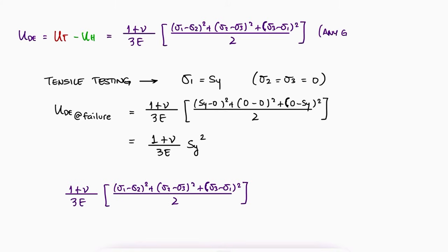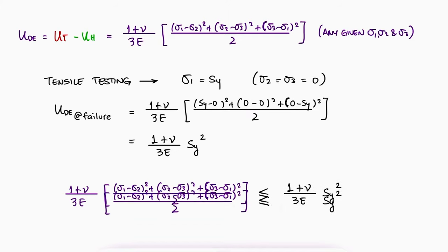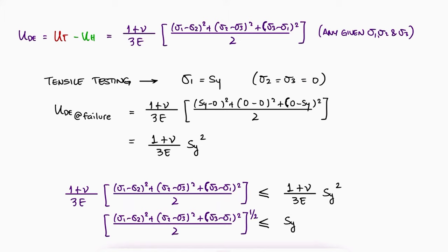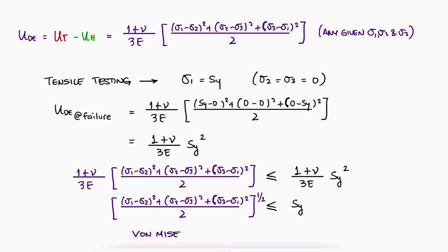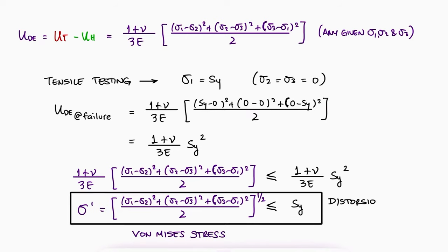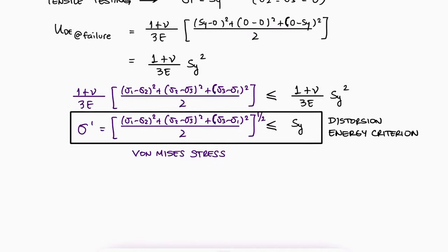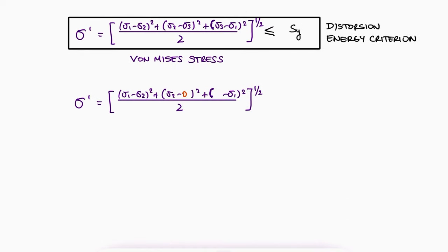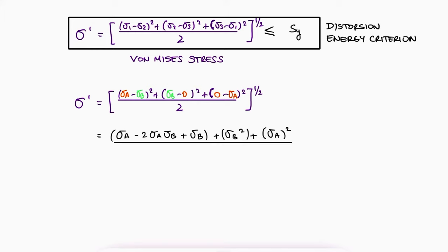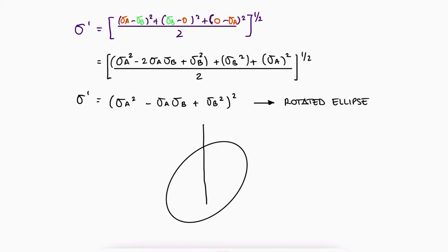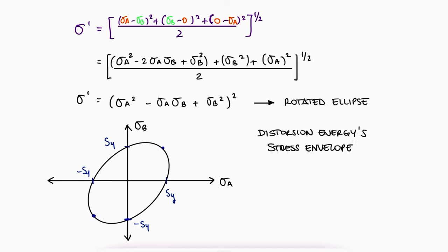The distortion energy for any case should never exceed the distortion energy during tensile testing — in other words, the von Mises stress should not exceed the yield strength. This stress is called the von Mises stress, denoted sigma prime. For a 2D stress element, at least one of the three principal stresses is zero. If we substitute the other two as sigma a and sigma b, we can identify this as the expression of a rotated ellipse, which is the stress envelope for distortion energy. The factor of safety is the yield strength divided by the von Mises stress.